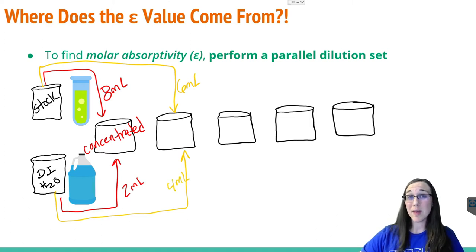Notice that my total volume is remaining the same. Initially I had eight plus two, now I have six plus four, so I'm aiming for a total volume of 10 for all of the samples in the dilution set.